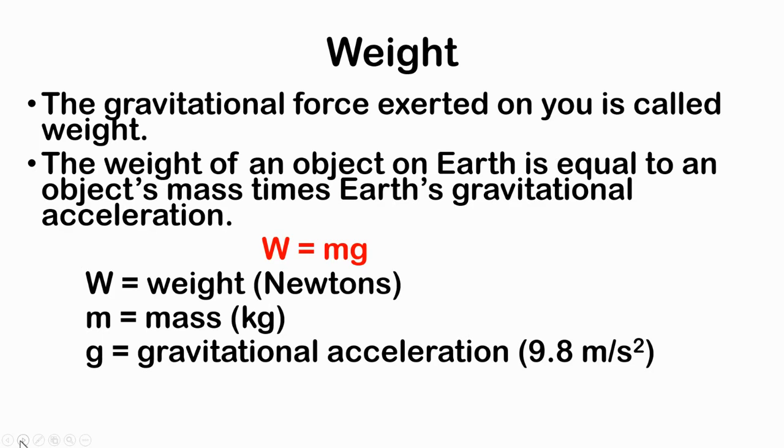The gravitational force exerted on you is called weight. The weight of an object on Earth is equal to an object's mass times Earth's gravitational acceleration. So weight equals mass times gravitational acceleration. This is a lot like that force of gravity we just saw. It's a lot like the equation of force equals mass times acceleration. Well, the acceleration here is gravitational acceleration. The force here, we're just going to call it weight.